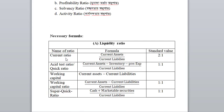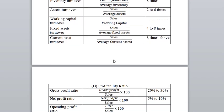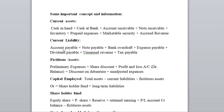For example, the current ratio is current assets divided by current liabilities. Current assets include: cash in hand, cash at bank, account receivable, note receivable, inventory, prepaid expenses, marketable security, and accrued revenue.